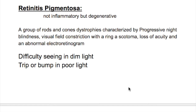Retinitis pigmentosa is not an inflammatory disorder, but a degenerative disorder. It is a group of rods and cones dystrophy characterized by progressive night blindness, visual field constriction with a ring scotoma, loss of acuity, and an abnormal electroretinogram.